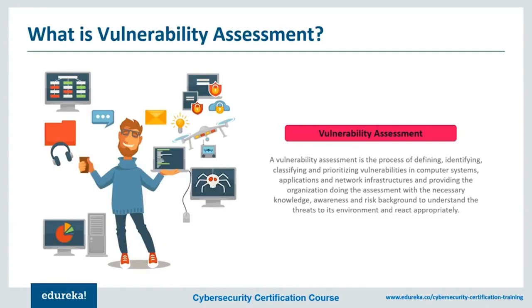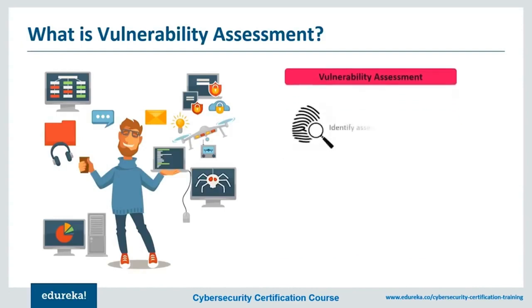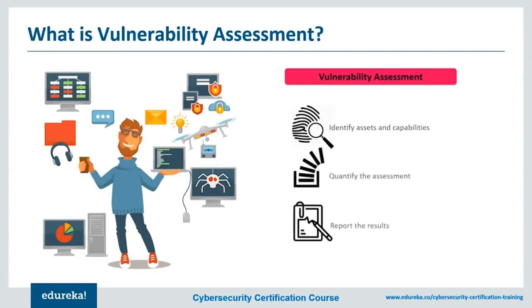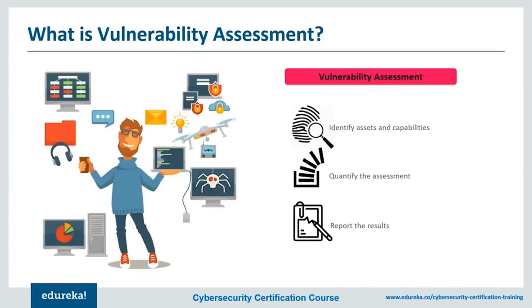Vulnerability assessment has three steps: the first is identifying the assets and vulnerabilities of the system, the second is quantifying the assessment, and the third is reporting the results. Vulnerability assessment is only a small part — pen testing is an extended process that includes scanning, vulnerability assessment, exploitation research, and reporting.